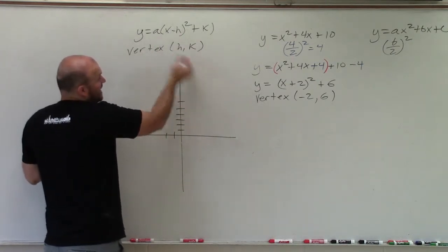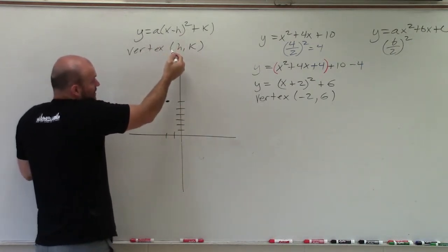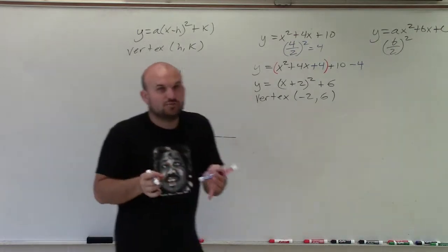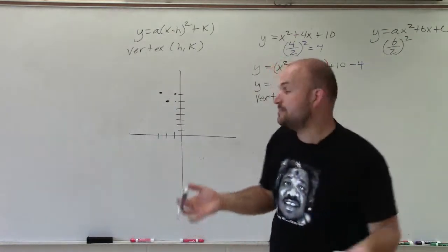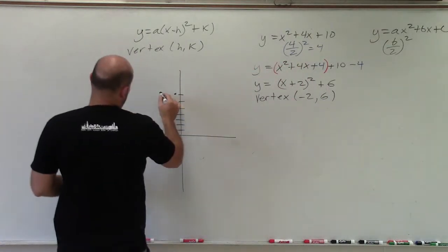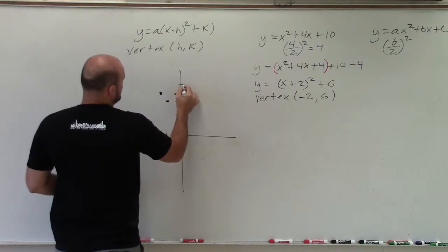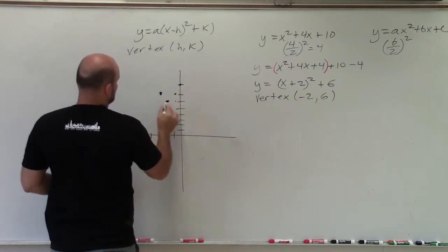Since my a is not affecting my graph at all, I know it's going to be the same as the standard. The relationship from the next two points from its vertex are going to be just like the parent graph. So I'm going to go over 1 up 1, over 1 up 1, and then over 2 up 2, and then over 2 up 2.